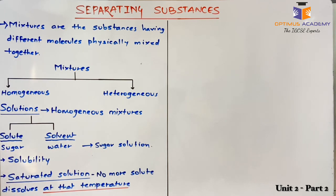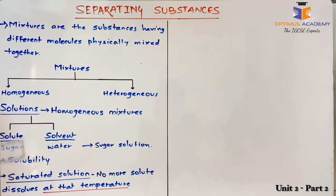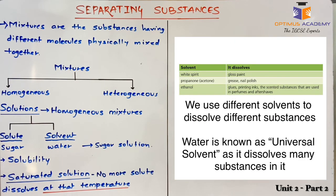In this video, we have understood what mixtures are, the classification of mixtures as homogeneous and heterogeneous, solutions as homogeneous mixtures, what solutes and solvents are, and solubility — and how to increase solubility by changing the temperature. Water is also known as the universal solvent as it can dissolve many substances. But along with water, we have other solvents as well, like ethanol or acetone — acetone is something we use to remove nail polish from the nails.